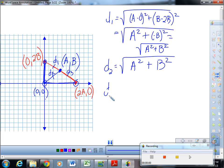So, now, let's see what D3 ends up being. The square root of 2A minus A squared plus 0 minus B squared. 2A minus A is A. 2A minus A is A. 0 minus B is negative B.